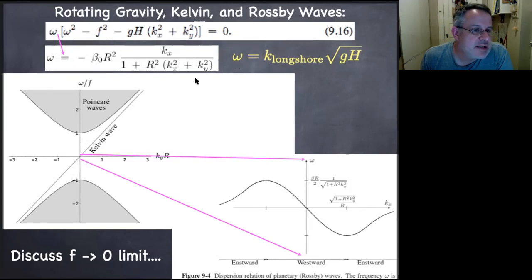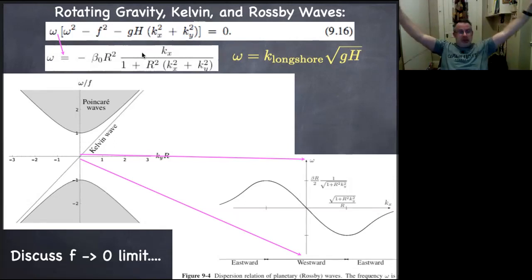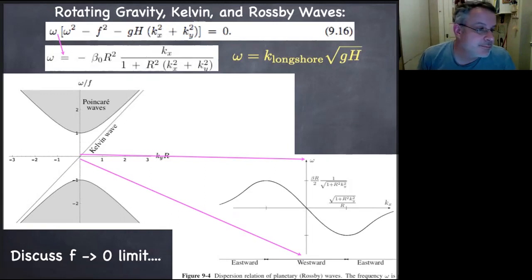If you zoom in, there's actually another wave sitting right near frequency equals zero — very long time scale limit. That wave is the Rossby wave. It has a dispersion relation involving both the Rossby deformation radius, the wavelength, the wave number, and the inverse of the x and y wave number magnitudes as frequency. This is a pretty complicated dispersion relation. If the term in the denominator is small, you have just minus beta r-squared times kx, which means that at least in the x direction, it's a non-dispersive wave. The y direction is always dispersive for long or short waves.